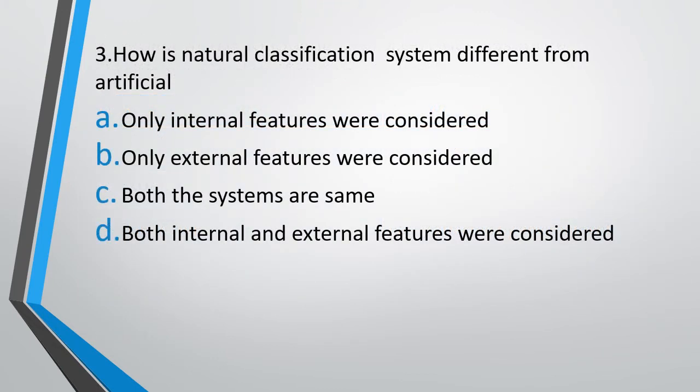Question 3: How is natural classification different from artificial classification system? Option A: Only internal features were considered. Option B: Only external features were considered. Option C: Both the systems are the same. Option D: Both internal and external features were considered. The correct answer is Option D — both internal and external features were considered.